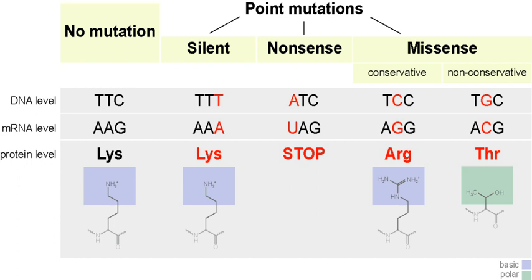Transitions are replacement of a purine base with another purine, or replacement of a pyrimidine with another pyrimidine. Transversions are replacement of a purine with a pyrimidine or vice versa. There is a systematic difference in mutation rates: transition mutations are about ten times more common than transversions.